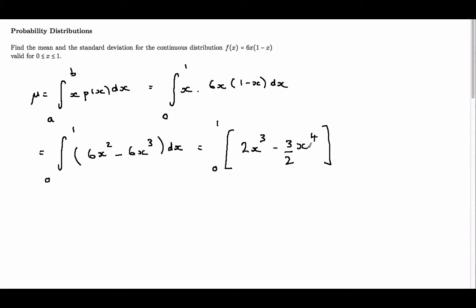So all we need to do is substitute in our limits. So we have 2 lots of 1 cubed minus 3 over 2 lots of 1 to the 4, take away 2 lots of 0 cubed minus 3 over 2 lots of 0 to the 4. So this final bracket is all equal to 0.